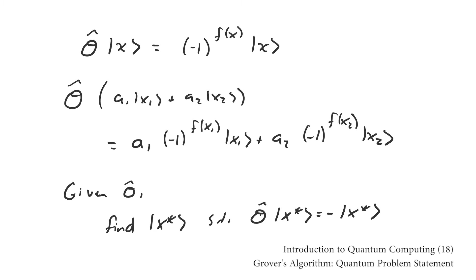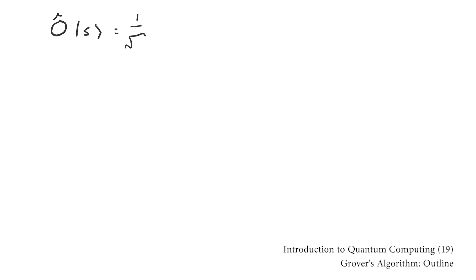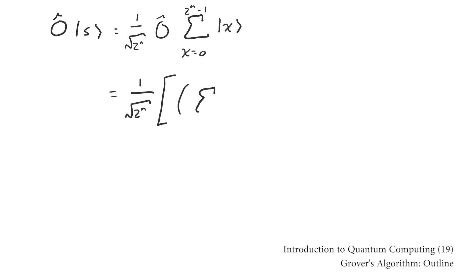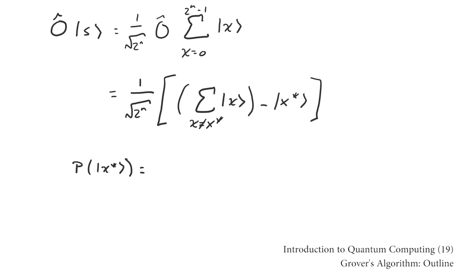Passing a superposition through the Oracle essentially allows us to check multiple classical states simultaneously. So to check all the classical states at once we pass the uniform superposition through the Oracle. However, though x star has been marked at this point, we aren't done. We don't ever get to observe a quantum system in superposition — it collapses to one of the basis states upon measurement. If we were to measure the system at this point it would have an equal probability of collapsing to any given basis state, so we'd be just as well off guessing at x star.